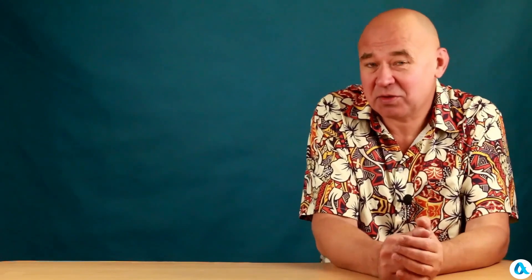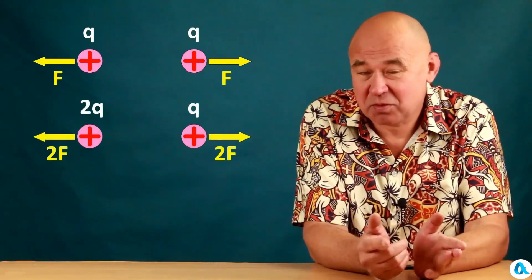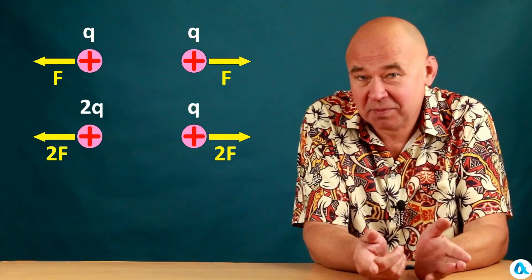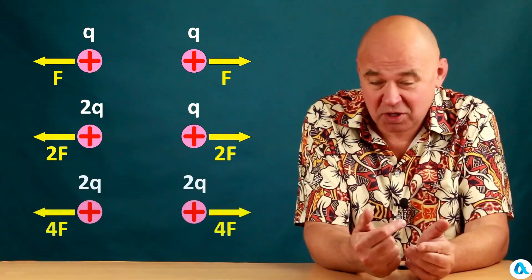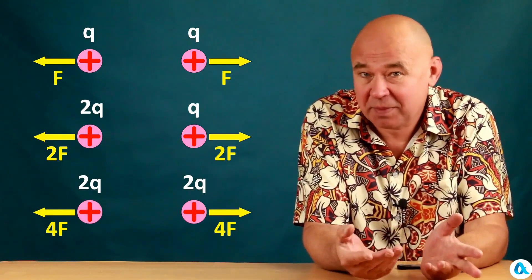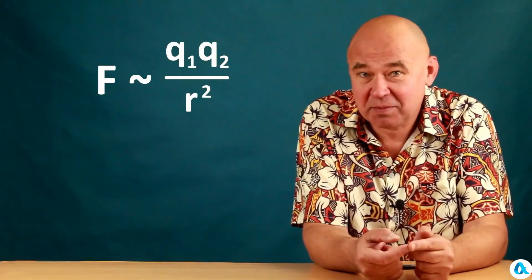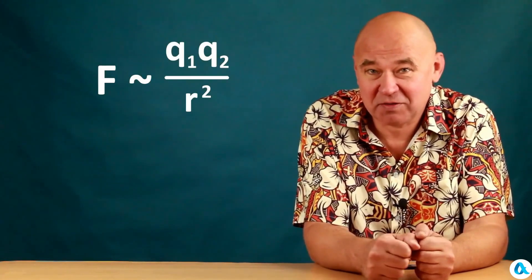We have figured out the dependence of force on the distance between charges. Now we need to understand the dependence of the force on the magnitude of the charges and here it seems quite natural to assume that if one charge is doubled the force will also double and if the second charge is also doubled the force will increase by another factor of 2 that is by a total of 4. In general in this sense the force should be proportional to the product of the charges and now we will also try to verify this experimentally.